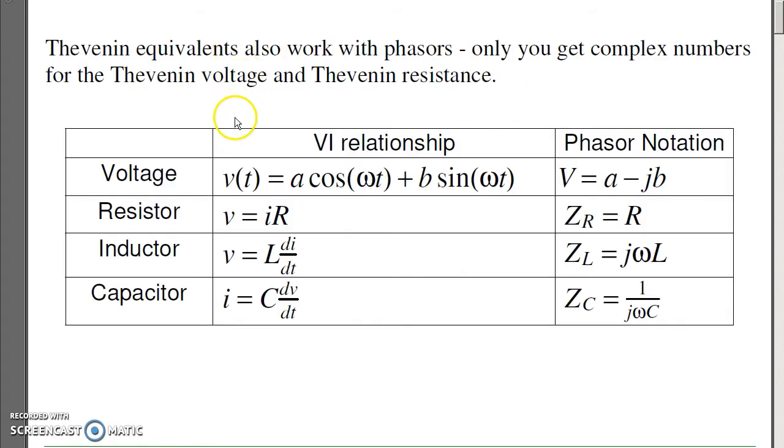Again, as a reminder, for voltages, a phasor representation of a voltage, the real is cosine minus j is sine. R's don't change, inductors become j omega L, and capacitors become one over j omega C.